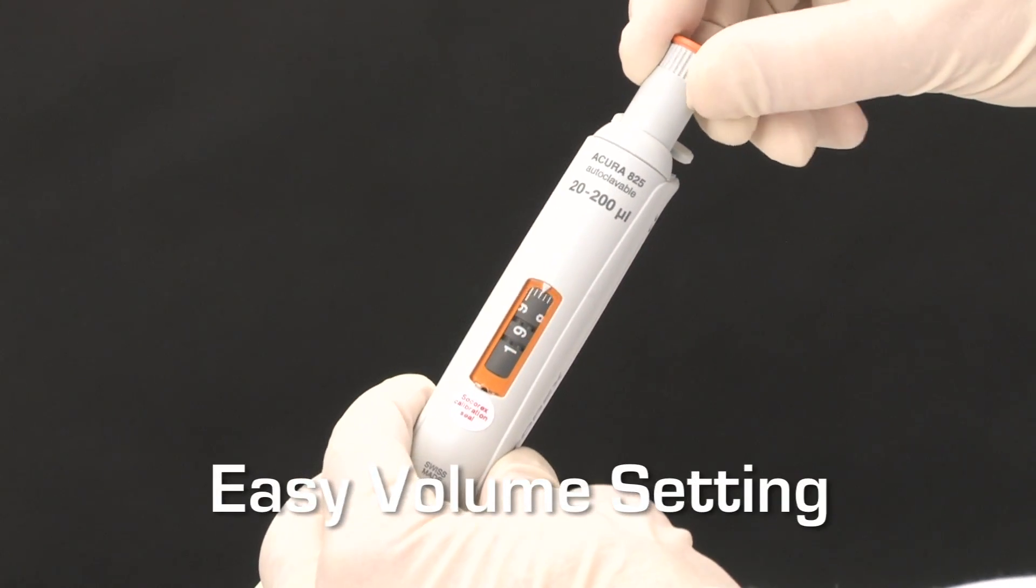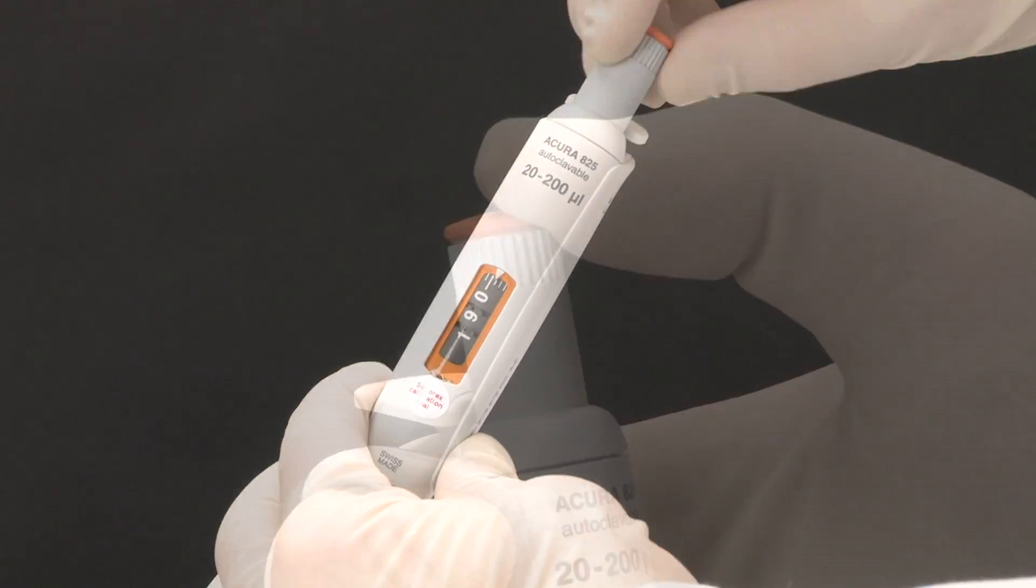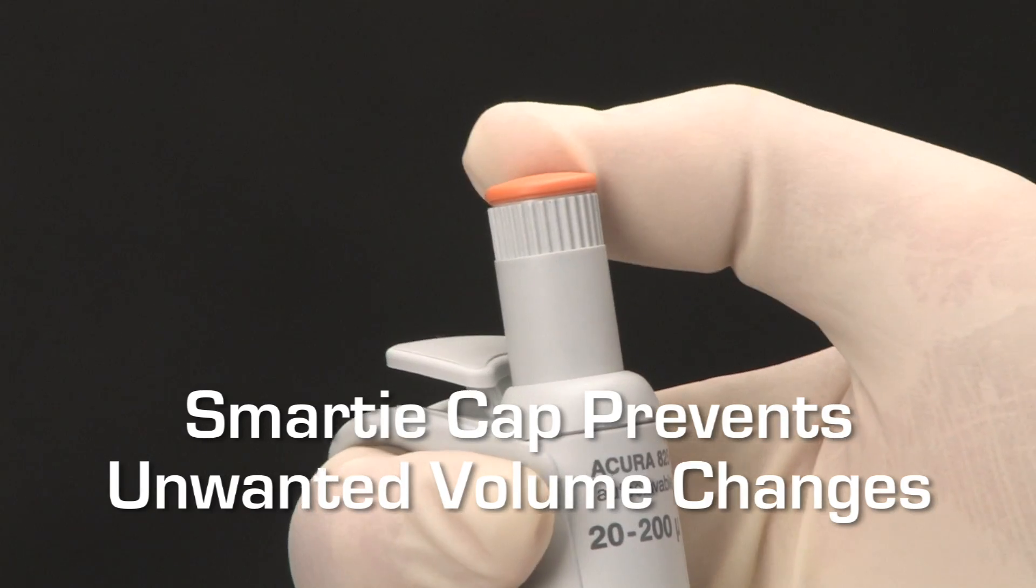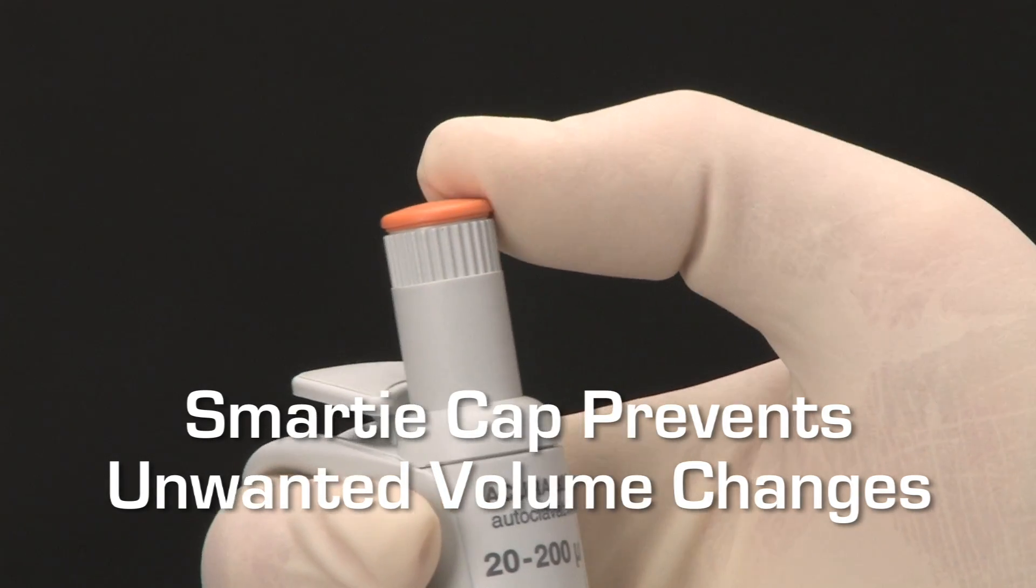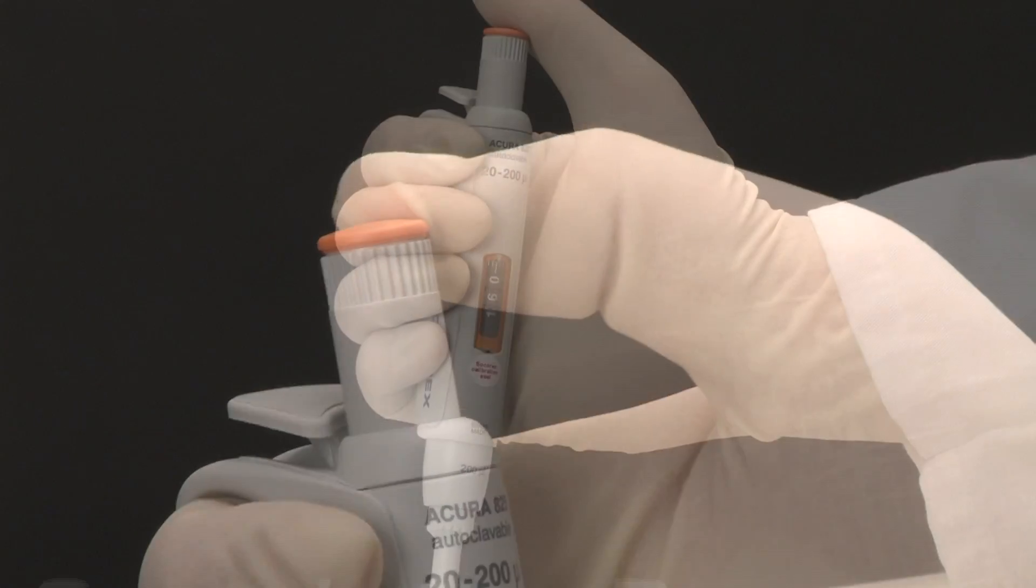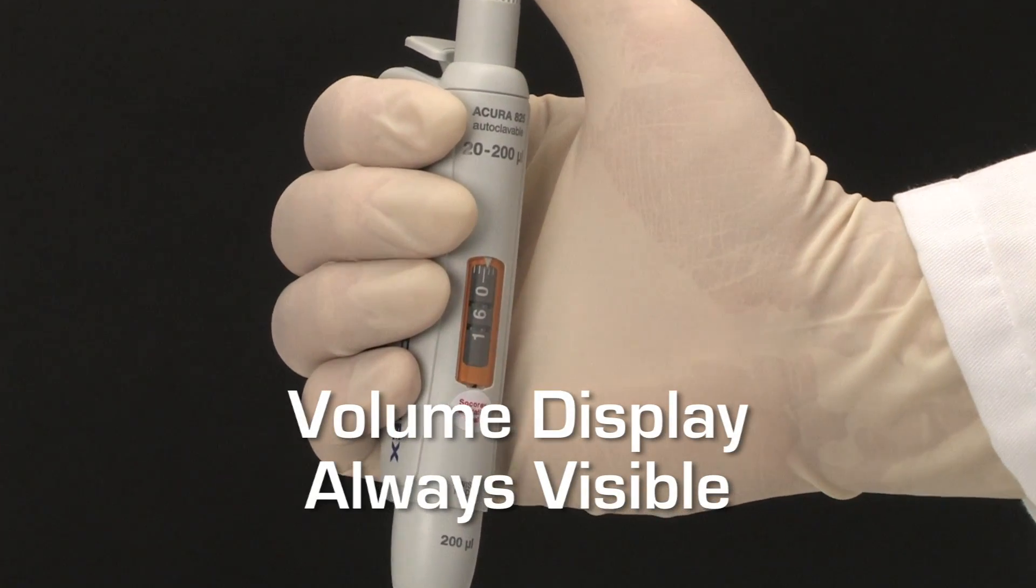Setting the exact volume to be dispensed with all Acura Manual Pipettes is simple and precise. Once selected, the free rotating color-coded cap prevents any unwanted volume changes from occurring during use. For positive verification, the contrasted volume display is visible anytime.